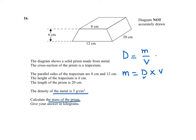We know the density and we need to work out the volume. So the volume of the prism is given by the area of the cross section of the prism, and in this case it's a trapezium.